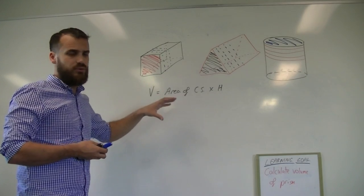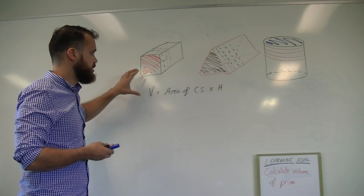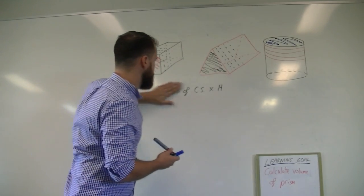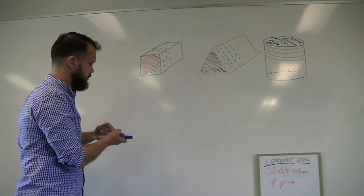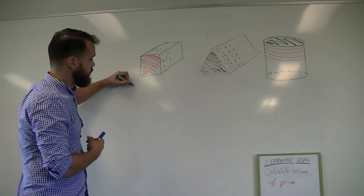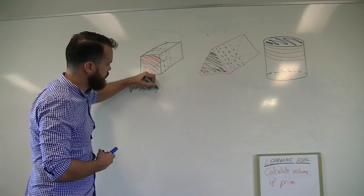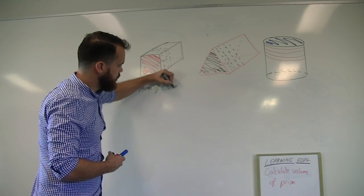So we can use that same formula to find the volume of all three of these shapes. Volume equals area of cross section times the height.